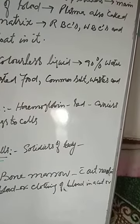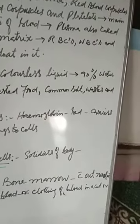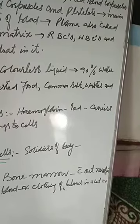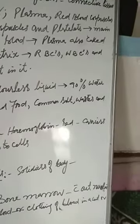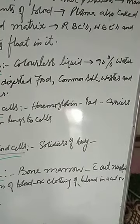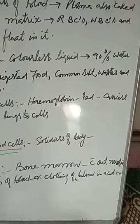Hemoglobin also carries some of the carbon dioxide from body tissues to the lungs. Most of the carbon dioxide is carried by plasma of blood in dissolved form. Red blood cells are circular in shape. RBCs do not have nuclei.